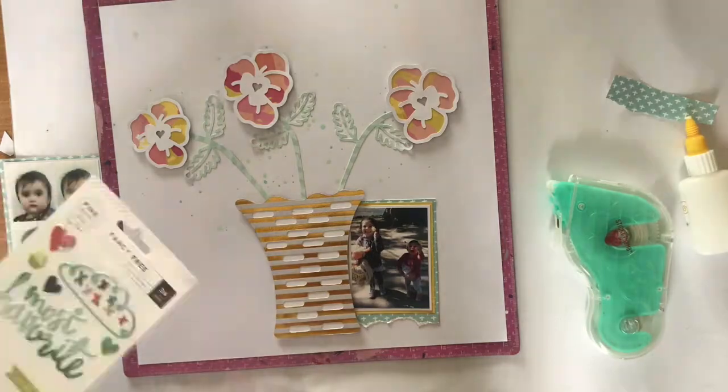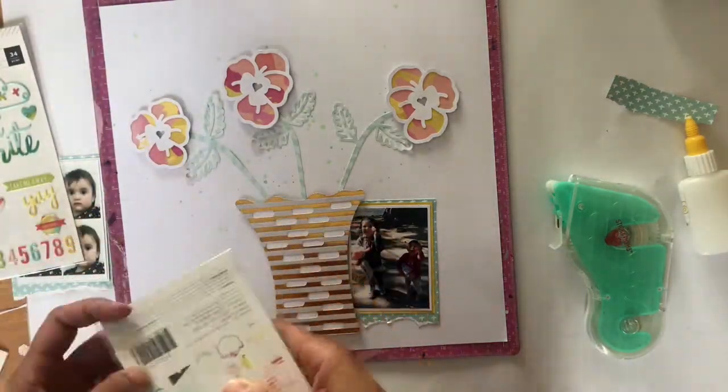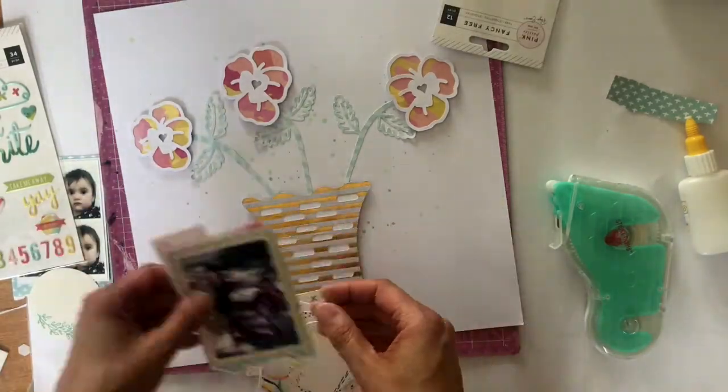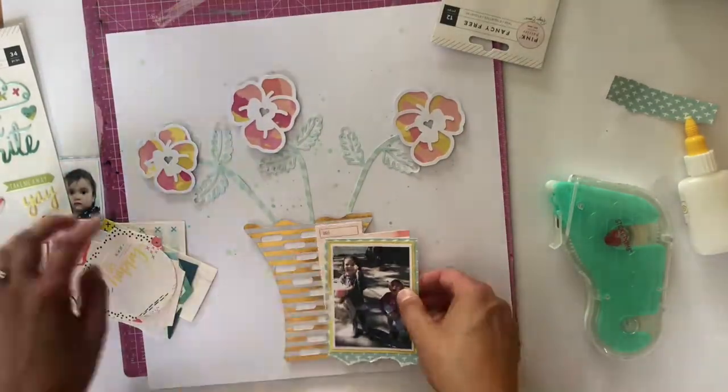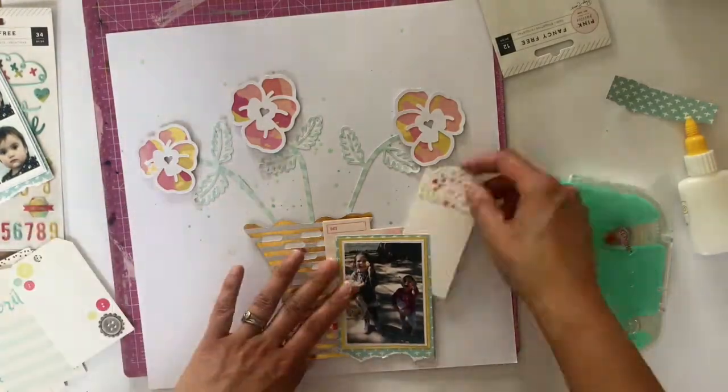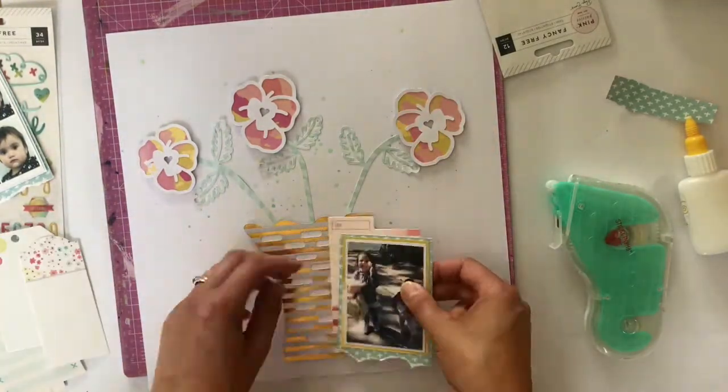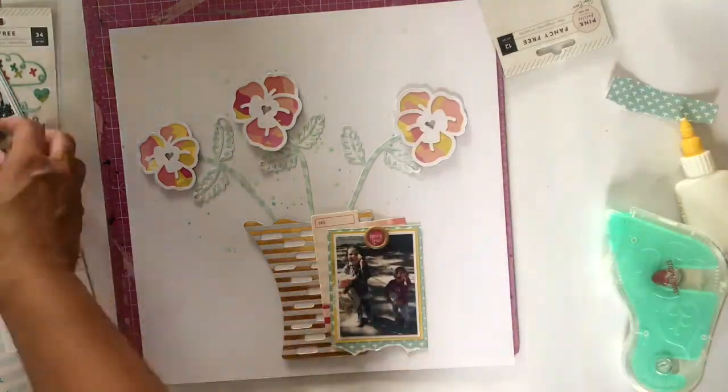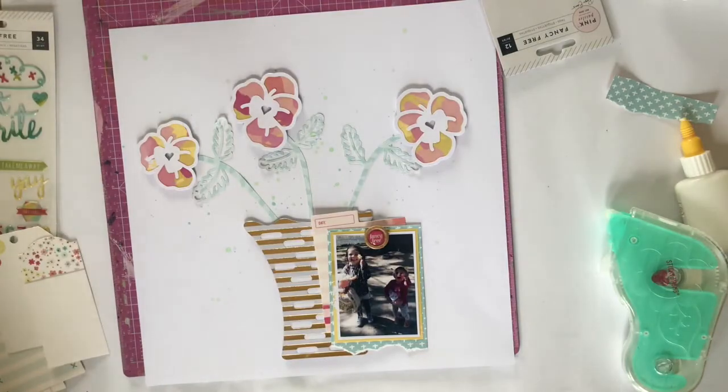So this is Paige Evans, I think it's Fancy Free, her first collection. I won some. I had commented on I think Celine Navarro's post when it first came out and I actually won quite a lot of the collection. But of course it was too beautiful. I struggled to use it because it was so beautiful. But now I've put it in this kit and it's forcing me to use it up, and I'm so happy that I'm able to get it on the page.